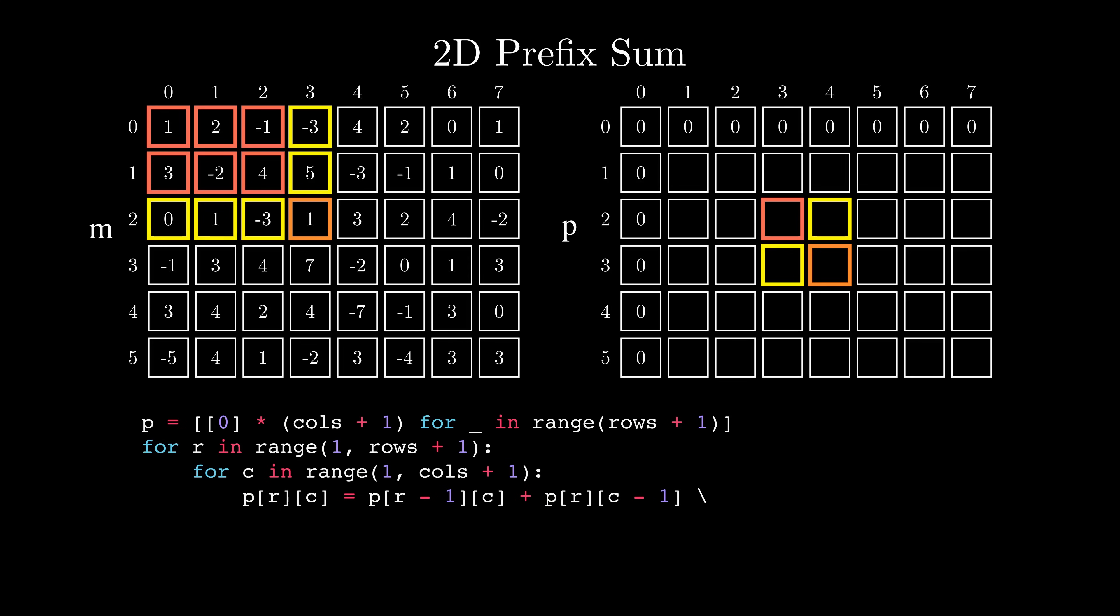After this, we can easily answer any query by performing simple additions and subtractions on just four numbers, the four corners of the query submatrix. By the way, if you'd like to practice what we just learned, you can head over to Profound Academy and try solving some practical problems to really master the materials. I'll leave the link in the description below.